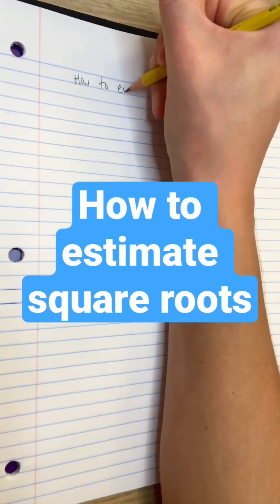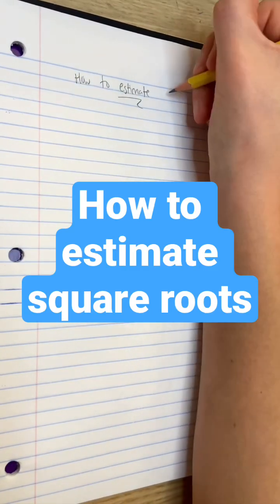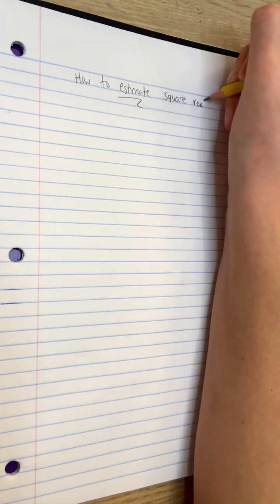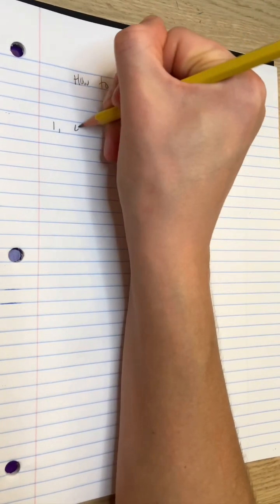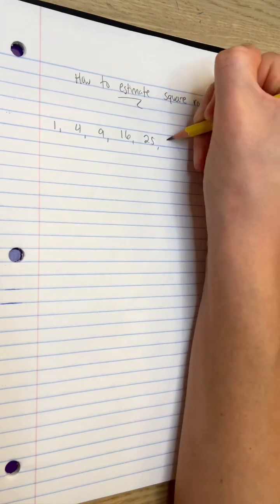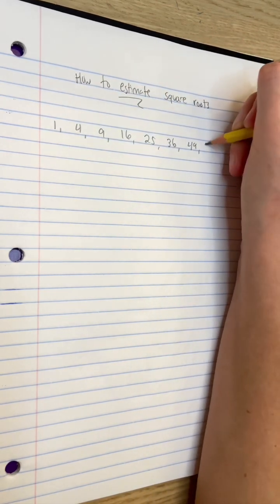Square roots of positive whole numbers are usually irrational and require a calculator to compute accurately, but we do have a method to estimate their values. First, it's helpful to remember the numbers we do know the square roots of, the perfect squares.